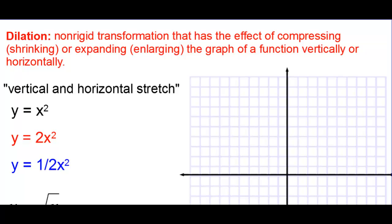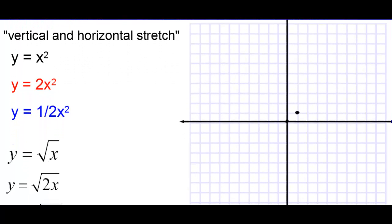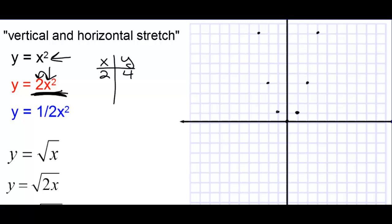A vertical and horizontal stretch. Let's start with y equals x squared. When we multiply by 2 on the outside of the function, we double all the y-values. So plugging in 2 gives 4, but then multiplied by 2 makes it 8. Doubling 0 stays 0, doubling 1 gives 2, doubling 4 gives 8. This stretches vertically by a factor of 2.